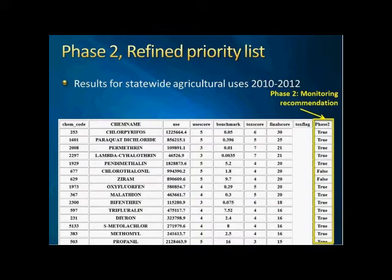By default, this is the recommendation for the parent active ingredient, but there is an option in the program to also display recommendations for degradates. So how do we determine the recommendations and what criteria are used? That's the next slide.